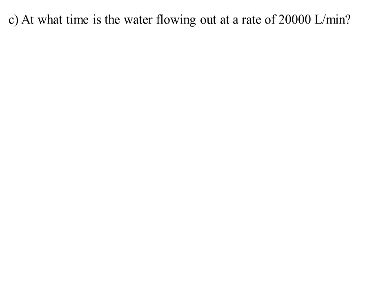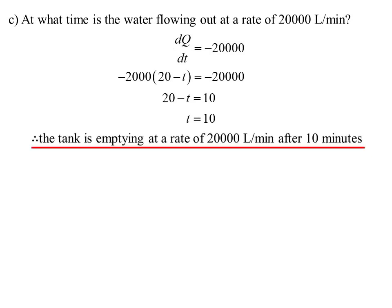But now we can ask questions about the water flow. At what time is the water flowing out at a rate of 20,000 litres per minute? So now we say well when is that rate of change negative, because it's decreasing, 20,000. So that's the equation we have to solve, and that's t equals 10. So we know after 10 minutes it's going to be emptying at that particular rate.